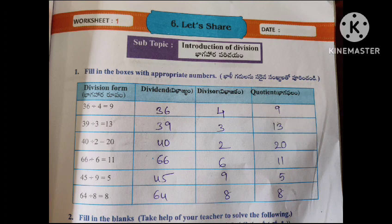36 divided by 4 equals 9. In this example, the dividend is the number being divided; the divisor is 4. Second problem: Dividend 39, Divisor 3.